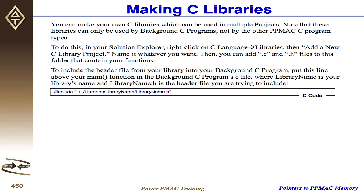If you want to make a C library, add the new C library project to the libraries folder as described before. Then include the header file from your library using this syntax in your C program — it basically backs up two folders and then goes into the libraries folder, and then you put the name of your library and then the name of your header file.